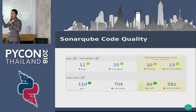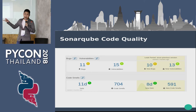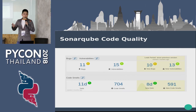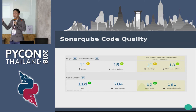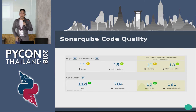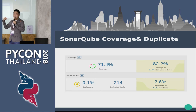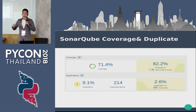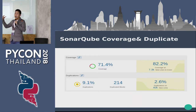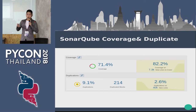For code quality, SonarQube can detect bugs, vulnerabilities, and code smells. It's easy to use. You can select or deselect rules to check syntax. For code coverage, similar to coverage in Python, it can build output to check which lines of code are not covered. For duplication, it can check about duplicate code across multiple files and suggest improvements.